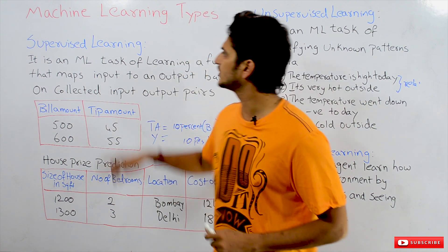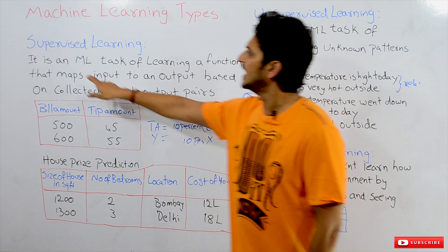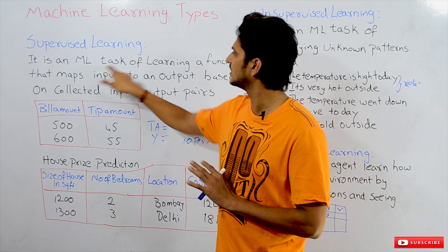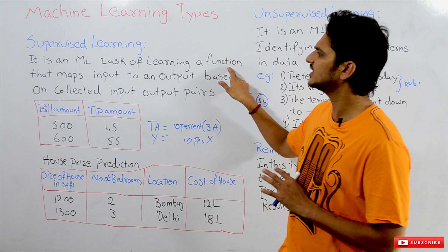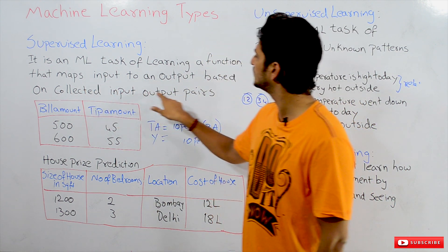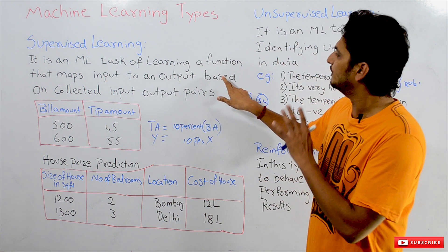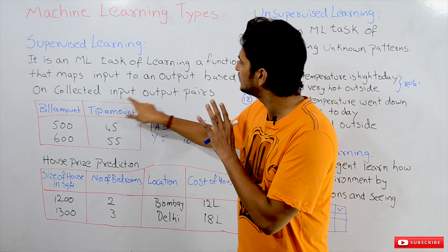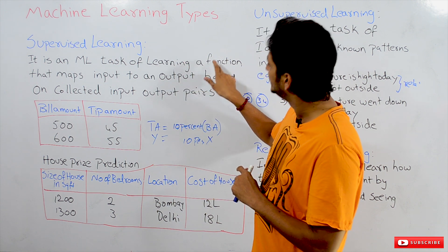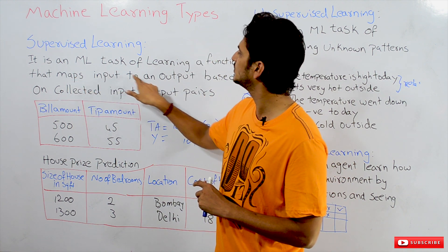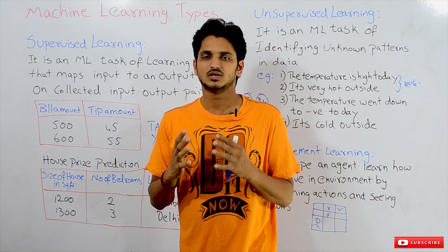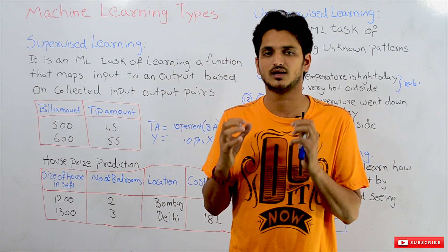Coming to supervised learning — the definition states it is an ML task of learning a function that maps input to an output based on collected input-output pairs. Based on the collected input-output pairs, we have to identify a mathematical function. This function has to map input to an output. So the example from our last class comes under supervised learning.